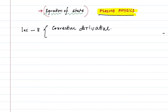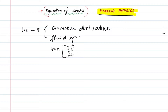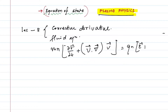We have also discussed the fluid equation: M·n times (∂v/∂t + v·∇v) = qn(E + v×B) − ∇p. This equation is the fluid equation.